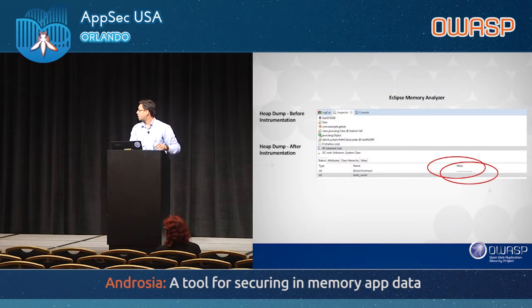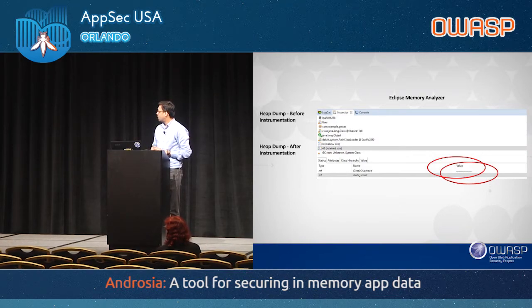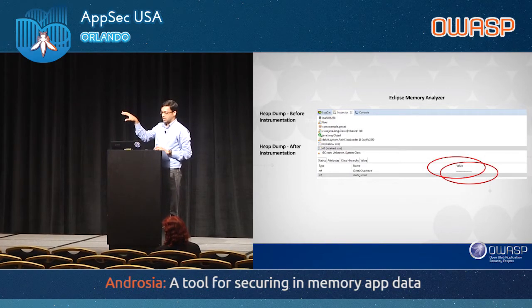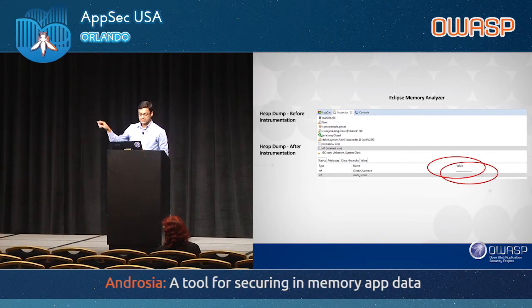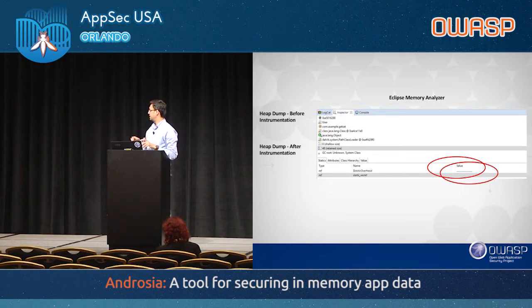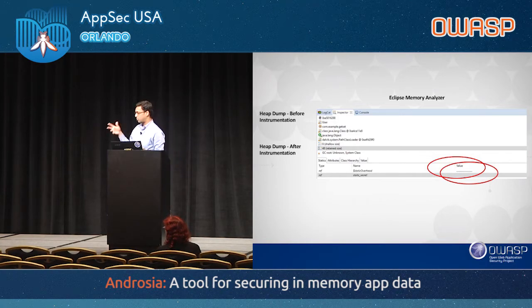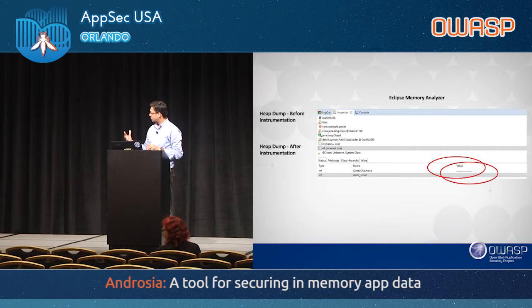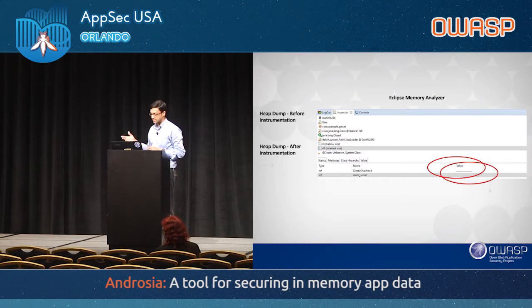A snapshot from the Eclipse Memory Analyzer tool shows a static field called 'static_secret' containing a password string — taken before optimization. Once we instrument the code and take a snapshot at the same point again, the password is no longer present.